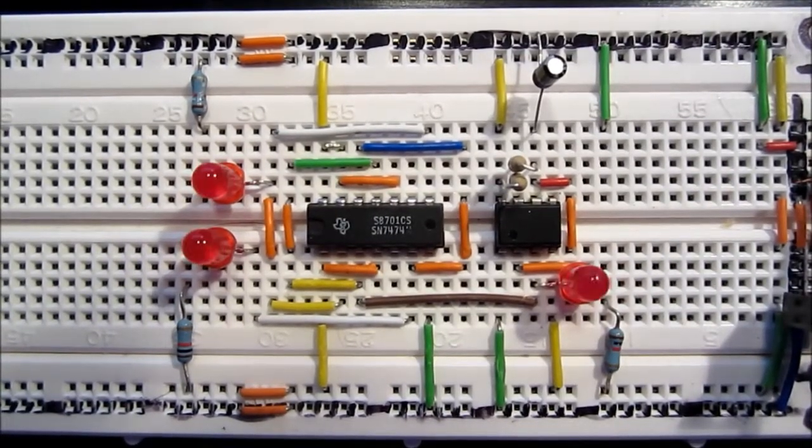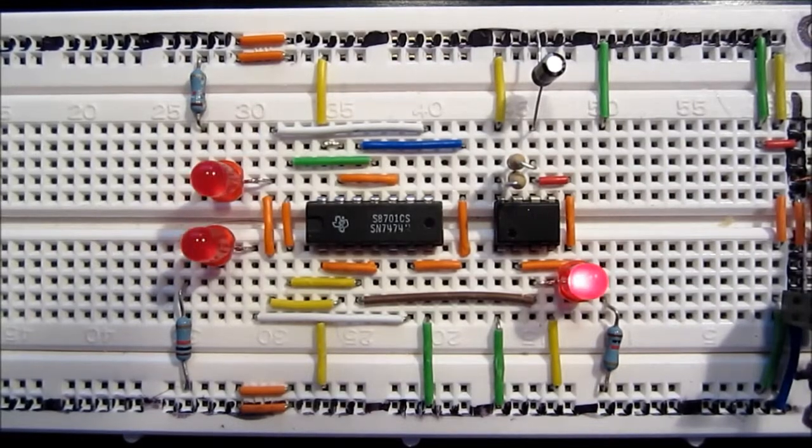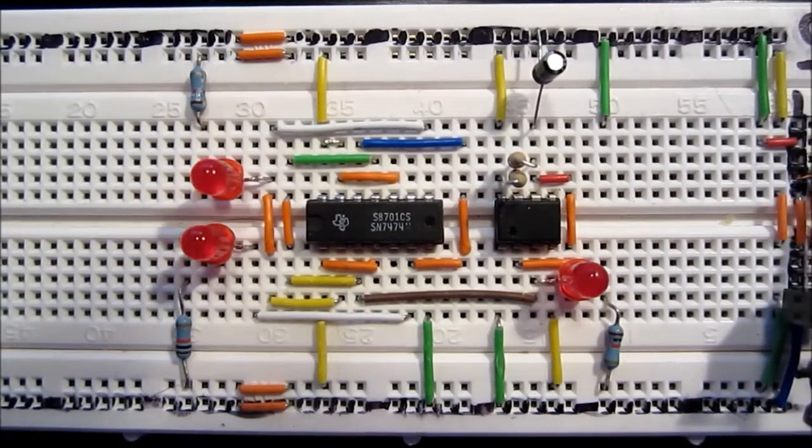So every time one of them changes states, the other one changes states as well. So they will never stabilize.